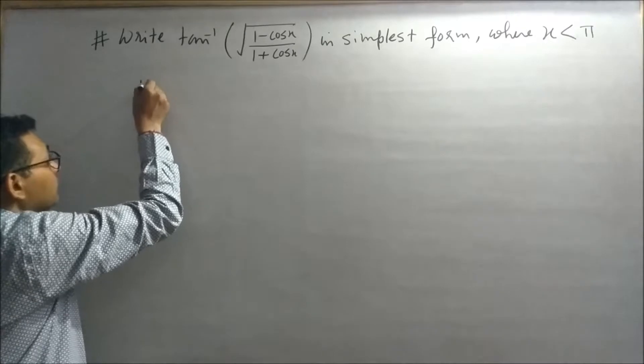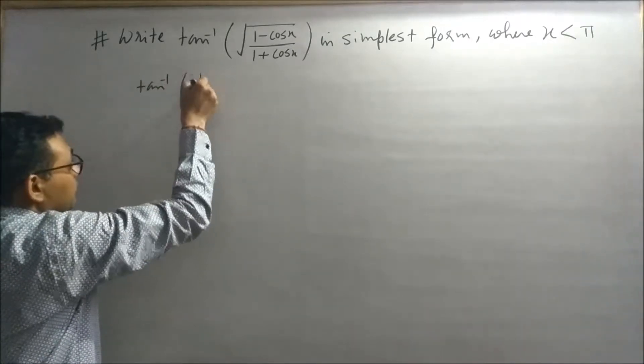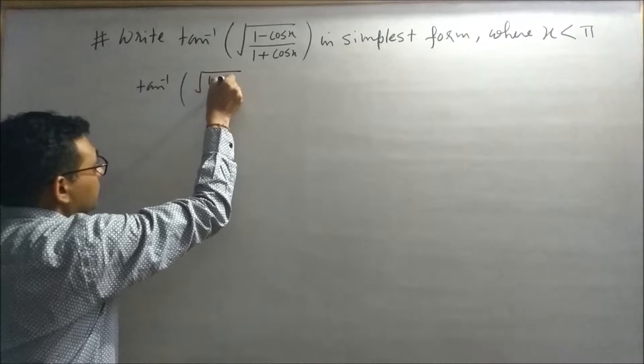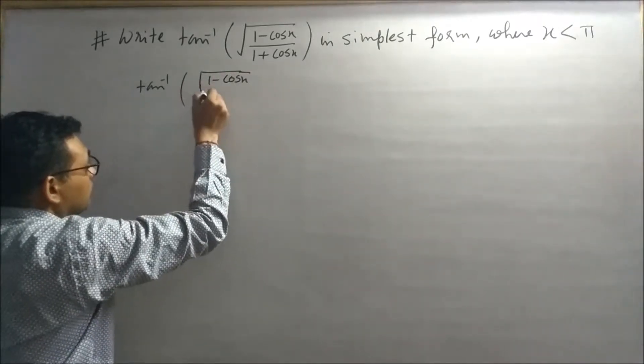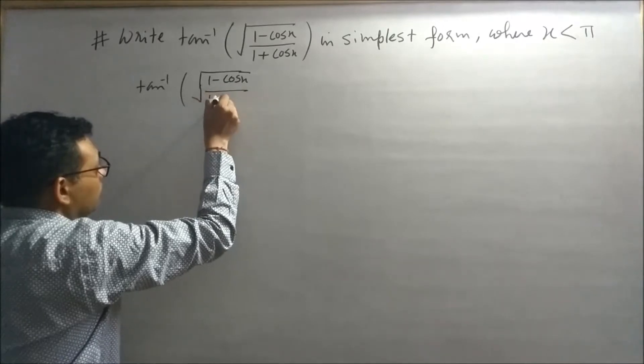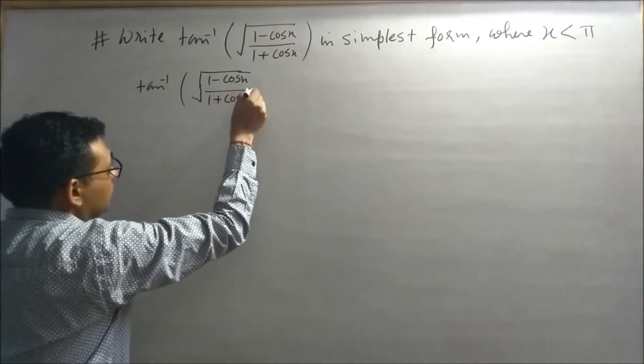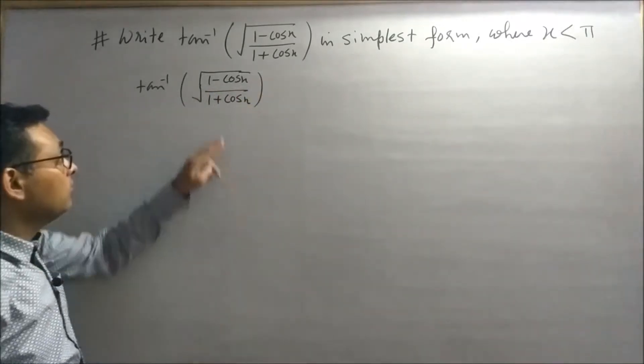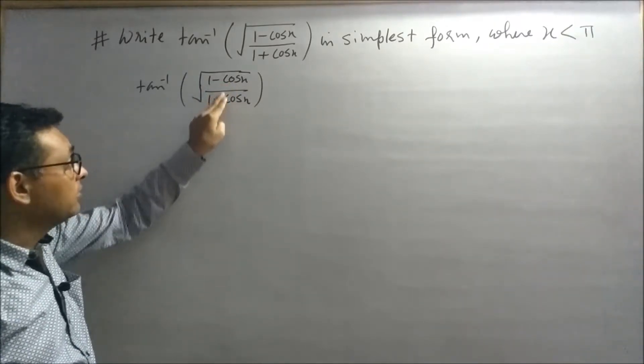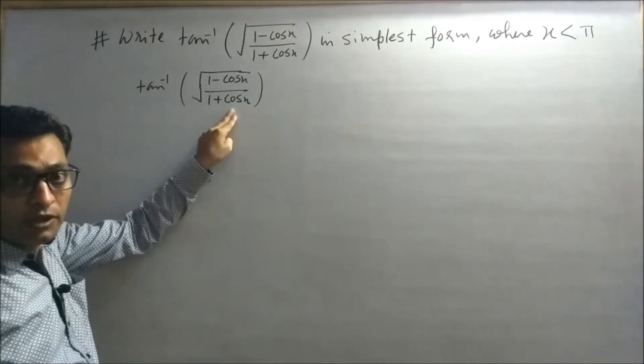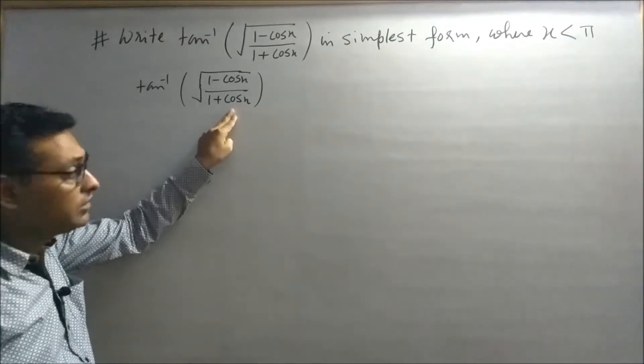Tan inverse x is given as (1 minus cos x) under root upon (1 plus cos x). 1 minus cos x को half angle में change करके sin में change कर लेंगे. 1 plus cos x को भी half angle में change करके cos में change कर लेते हैं.